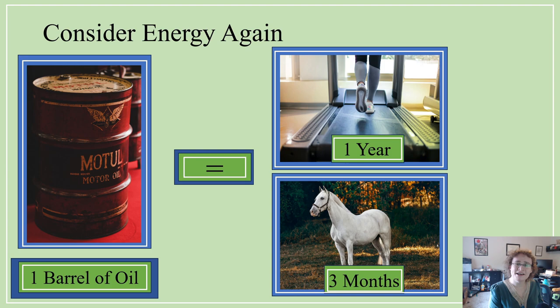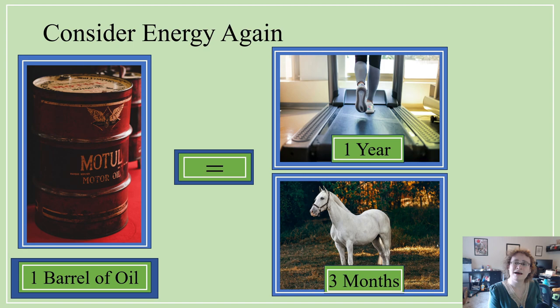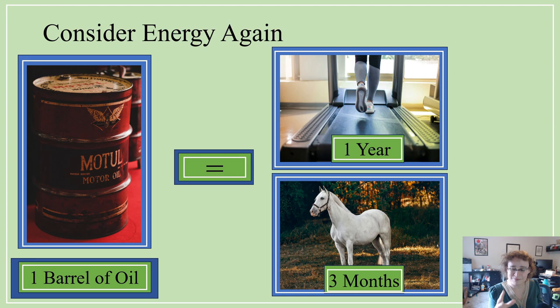Let us consider energy in context. How much energy is in a barrel of oil, and what does that mean in human terms? Petroleum has an energy density of approximately 36,000 megajoules per cubic meter, and an oil barrel is approximately 0.16 cubic meters, so a barrel of oil contains approximately 5,760 megajoules of energy. A human being, working hard manual labor, can output an average of 75 watts over an eight-hour workday, producing about 17.3 megajoules — meaning you would need to pedal a bicycle generator full-time for 332 workdays, essentially an entire year, to equal the energy in a single barrel of oil.